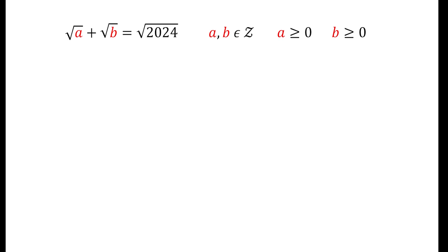How can we approach this problem? Most of you might say we can first square everything, but actually that would be a really bad tactic. The better tactic is to put one unknown radical on the right side of the equation.